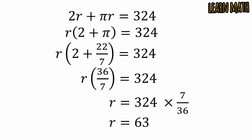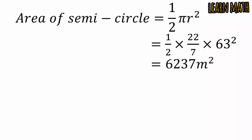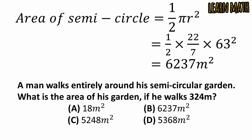Now the area of a semicircle is equal to half of πr². Assume π is equal to 22/7 and put r equal to 63. Simplify this and we get 6237 meter square. So the correct option is option B: 6237 meter square.